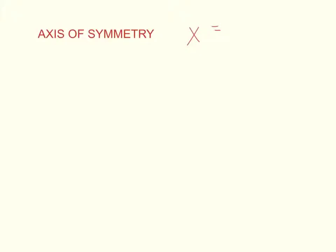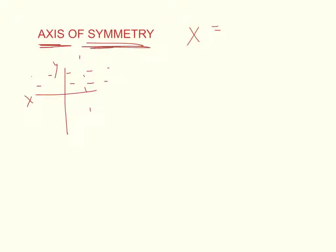Ladies and gentlemen, today we're going to learn about the axis of symmetry. Let's break that down real quick. Axis — you're used to hearing y-axis and x-axis, right? Same thing here: axis is just going to be a line that goes across, up or down. Now, symmetry means it's the same on the left as it is on the right. Faces are symmetric because if you cut them down the middle they usually look the same.